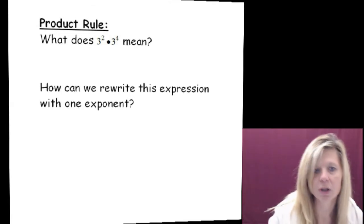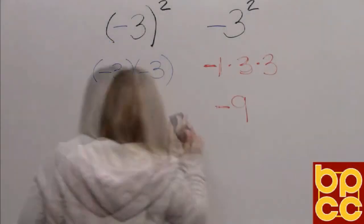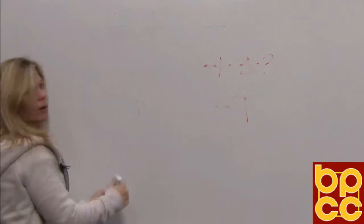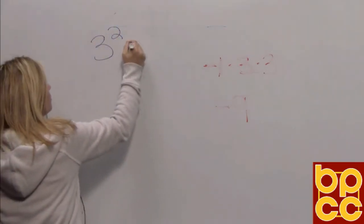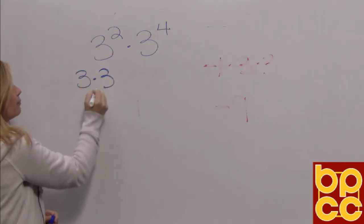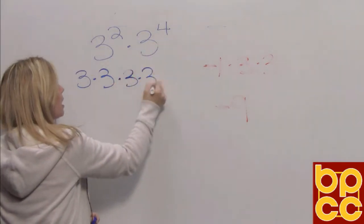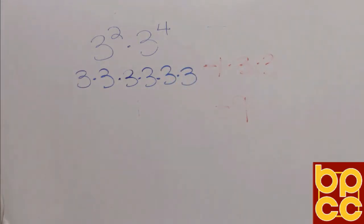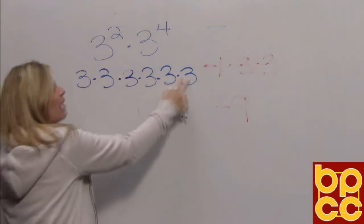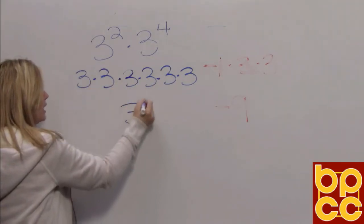Now we are going to go to a new rule called the product rule. Pretend you didn't have a calculator and I was asking you to do 3 squared times 3 to the fourth. We know the exponent 2 means to write the base twice: 3 times 3. We know the exponent 4 means to write the base 4 times: 3 times 3 times 3 times 3. Now if you look, you have the same base being multiplied six times. Instead of multiplying that out and getting a huge number, we can just say this is 3 to the sixth power.